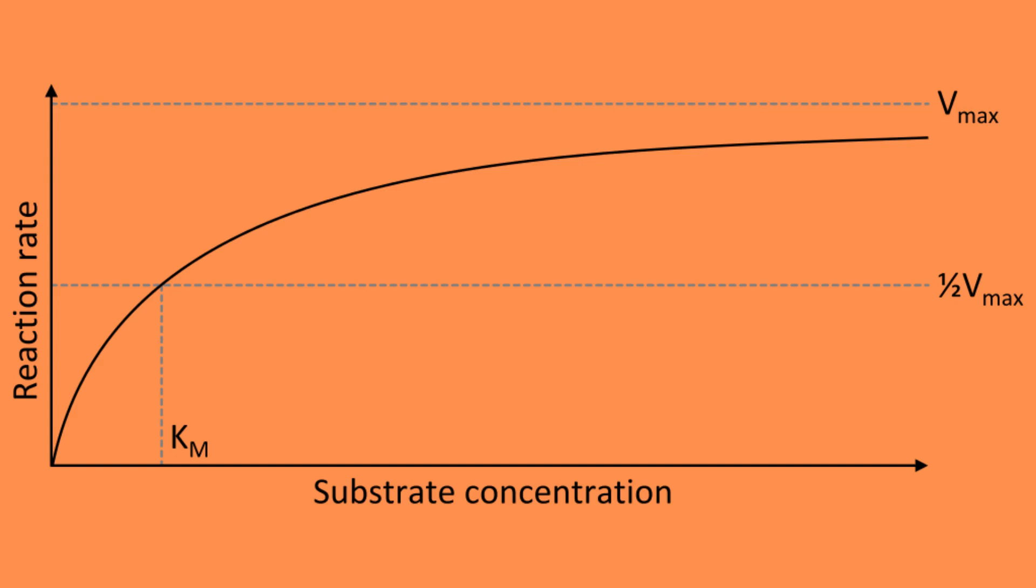Let us look at how we can express uncompetitive inhibition using Michaelis-Menten plot, where the y-axis is the rate of the reaction and the x-axis is the substrate concentration. So here you see a normal reaction between an enzyme and a substrate in the Michaelis-Menten plot. As the concentration of the substrate increases, so does the rate of the reaction.